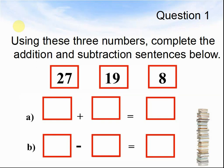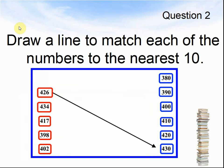Here comes the next question. Question 2. Draw a line to match each of the numbers to the nearest 10. So, for example, 426 rounds to 430. What does 434 round to the nearest 10? What does 417 round to the nearest 10? What does 398 round to the nearest 10? What does 402 round to the nearest 10? Pause the video until you are ready for the next question.